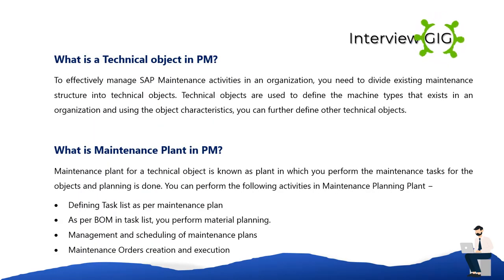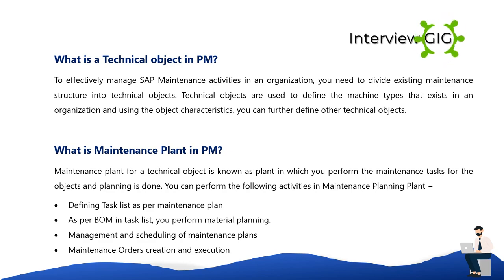A technical object in PM is used to effectively manage SAP maintenance activities in an organization. You need to divide the existing maintenance structure into technical objects. Technical objects are used to define the machine types that exist in an organization, and using object characteristics you can further define other technical objects.